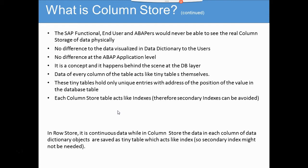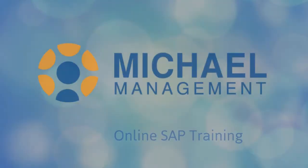So what does the column store do? The column store stores the unique entries with the address of the position of the value in the database table. For example, material number 10, material number 20, and another material number 20 in a PO — the column store will hold material number 20's position as 2 and 3. We will see this in the next slide which will be more clear. See you next time.